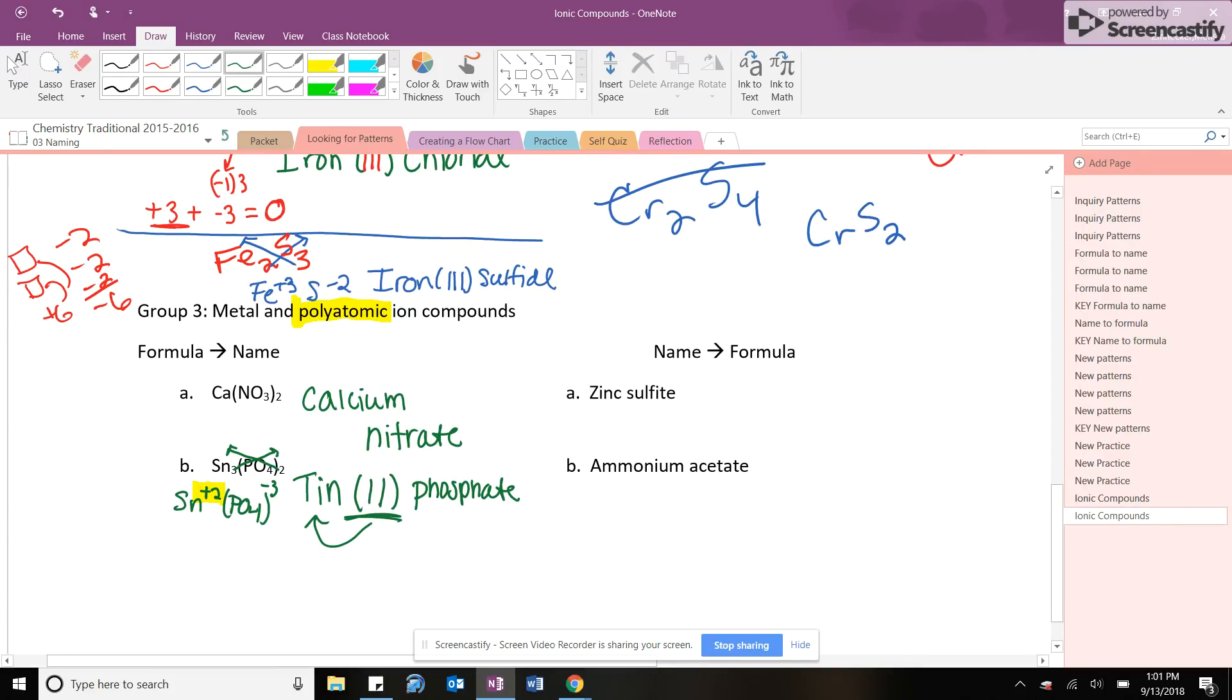And guys, if you do the math way again, if you know phosphate's a minus three, and if you have two of them, that's a minus six. Therefore, the tins have to totally add up to a plus six. And because I have three of them, it means each one is two. Great. Okay. Is that good? That's great. Yeah.